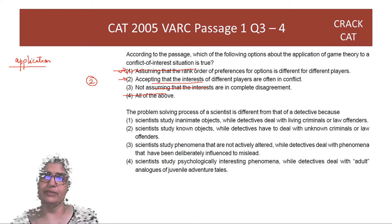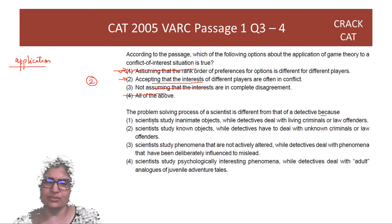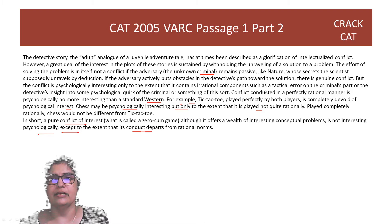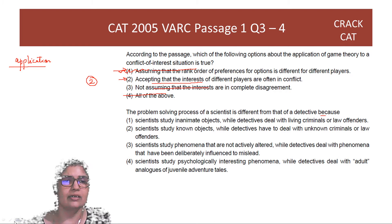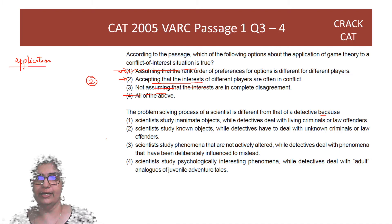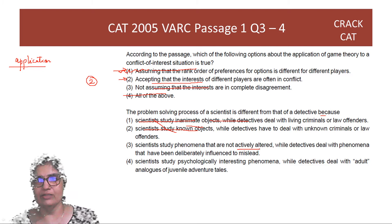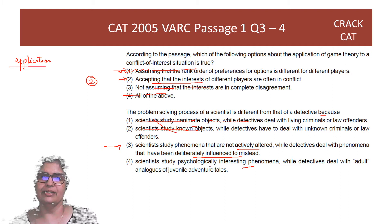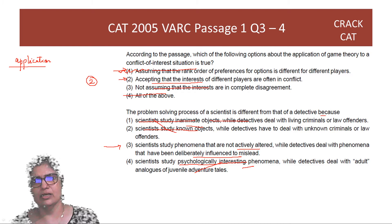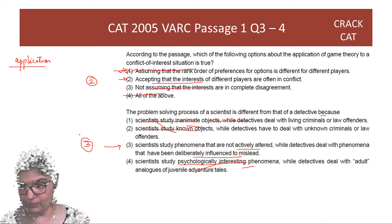Question: The problem-solving process of a scientist is different from that of a detective because... Option 1 — scientists study inanimate objects — the passage says nature is passive. Option 2 — scientists study known objects — no, they may study unknown objects too. Option 3 — scientists study phenomena that are not actively altered to mislead — this is correct, because nature is passive whereas detectives may face active obstacles by criminals. Option 4 — scientists study psychologically interesting phenomena — not true. The answer is option 3.